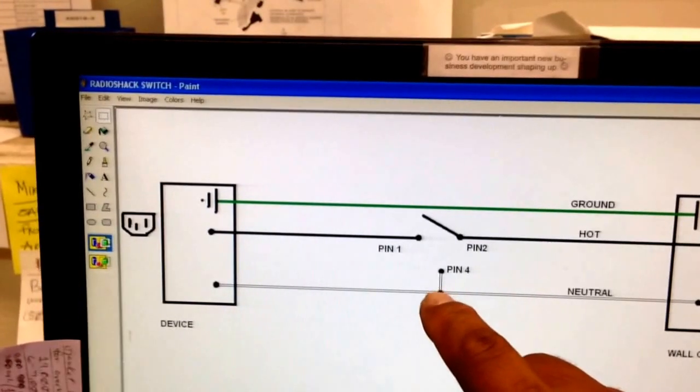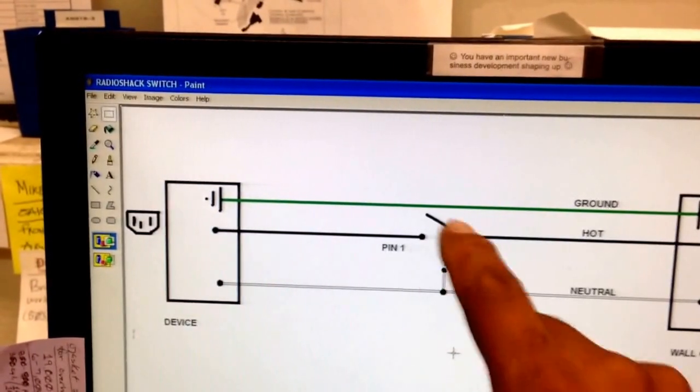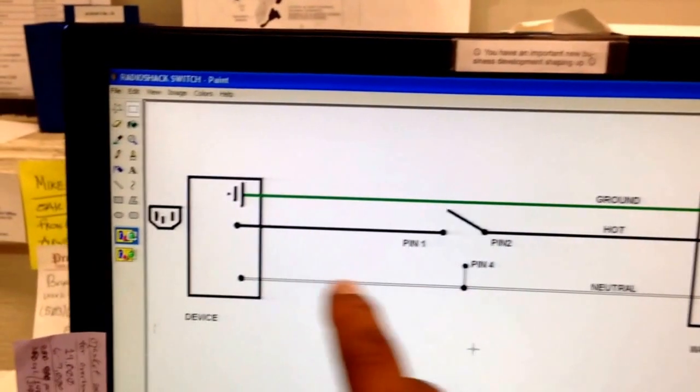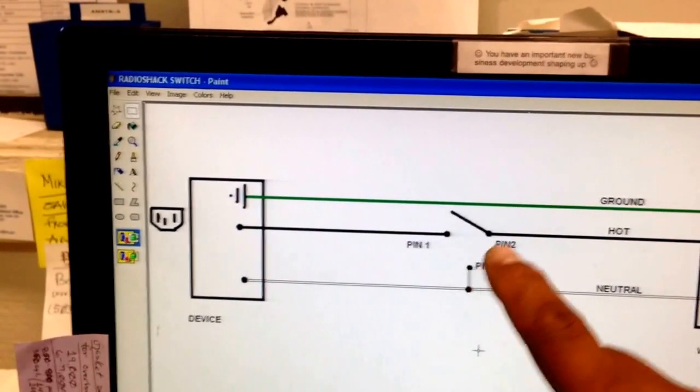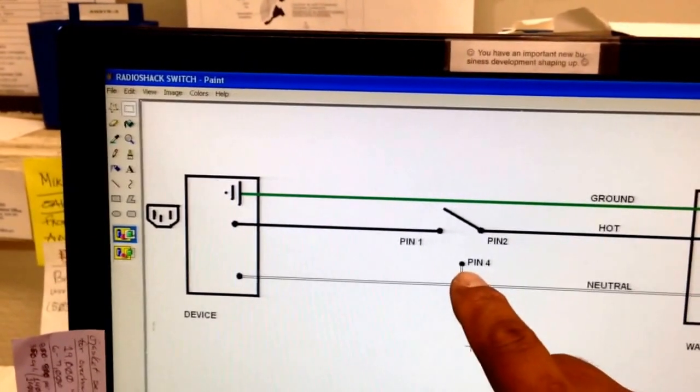Otherwise you would not need to connect this to the switch at all. You would just bypass it and go straight to the device. But in order to make the lights work for the switch, you need to connect it to pin four.